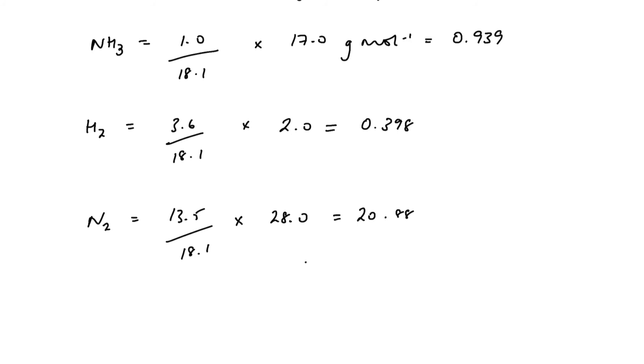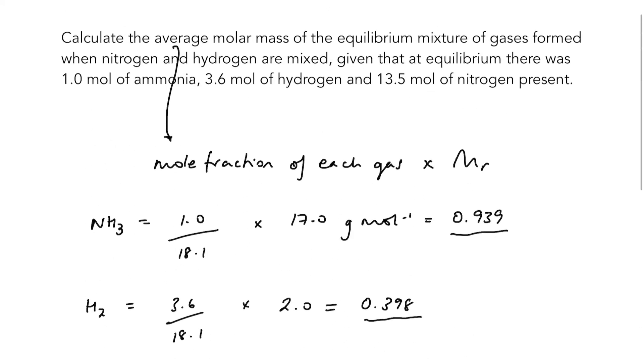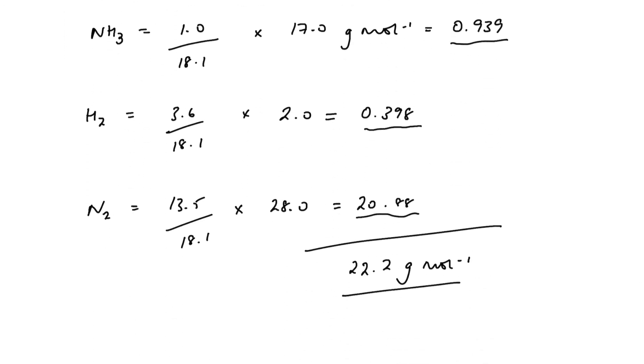If we add all that together - so we're talking about the mole fraction from each of the three gases multiplied by their molar mass - that comes to 22.2 grams per mole. So the average molar mass of our equilibrium mixture is 22.2 grams per mole.